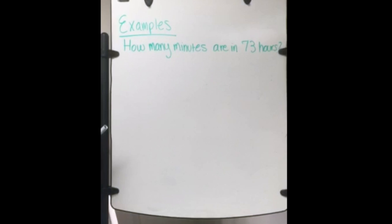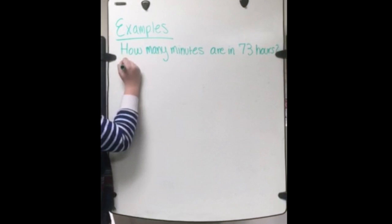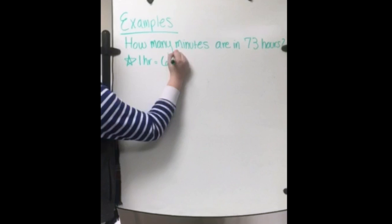An example of dimensional analysis would be how many minutes are in 73 hours. The conversion factor we would use for this would be 1 hour equals 60 minutes.